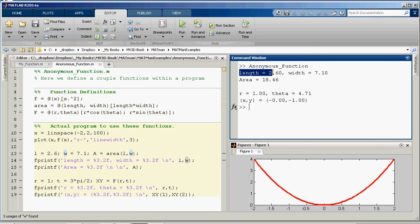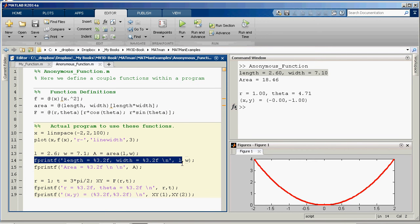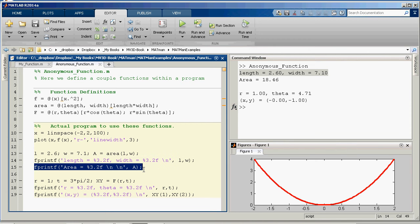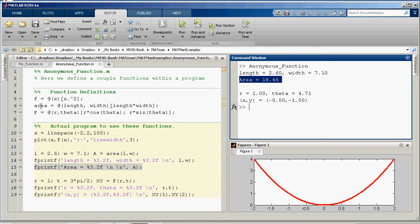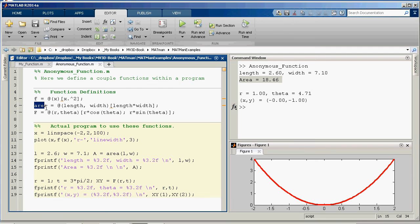All right, and so that's this first line right there. Length equals 2.60, width equals 7.10. That's done with this first line here, fprintf. And then the next line just prints the results of our function evaluation, and we get our area as calculated by the area function.